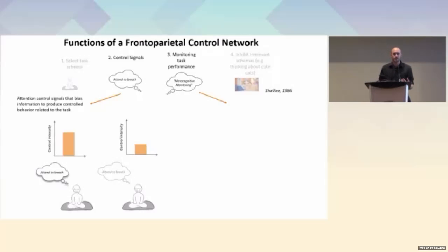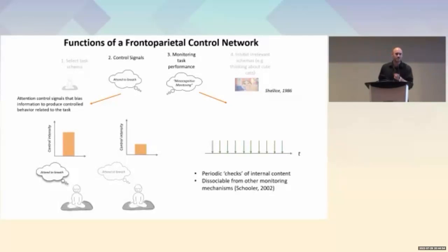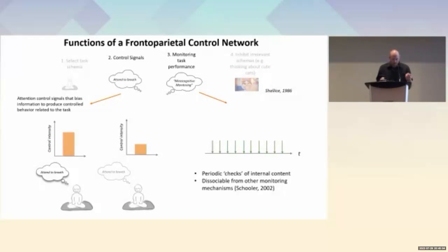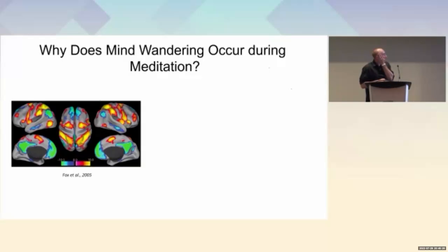The second function is metacognitive monitoring — our ability to check or sample what is on mind at any given moment. For example, I can ask what you're thinking about right now, to which hopefully you'd say you're thinking about what the speaker is talking about, unless your mind has already wandered. This is dissociated from other monitoring mechanisms that occur automatically, like monitoring your balance while riding a bike without being explicitly aware of it.